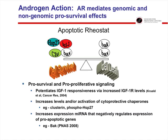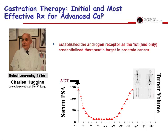In general, the androgen receptor is the dominant pro-survival signal in prostate cancer cells. It's not so much proliferative, but it enhances cell survival through a variety of pathways including IGF-1 signaling. It increases cytoprotective chaperones like clusterin, BCL2, and HSP-27, all of which enhance cell survival. It also increases microRNA — naturally occurring antisense within the cell — which knock down pro-apoptotic genes like BAX, as shown in a PNAS publication by Ralph deVere White out of San Diego.